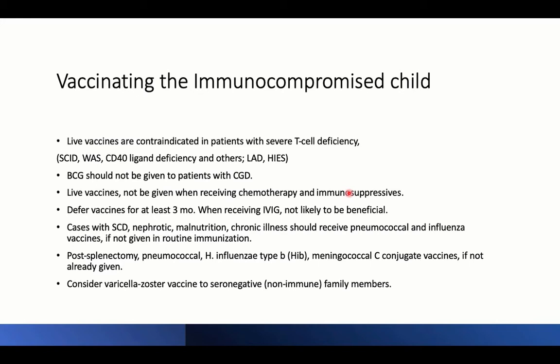Defer or delay vaccines for at least three months when receiving IVIG for any cause — whether for myocarditis, Guillain-Barré syndrome, or antibody deficiency requiring periodic IVIG. When giving IVIG, vaccines will not be beneficial as they will be attacked by the infused immunoglobulins. Cases with sickle cell disease, malnutrition, or chronic illness should receive pneumococcal and influenza vaccines if not part of routine immunization.